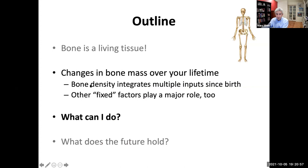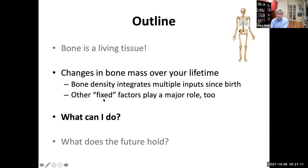The amount of bone you have now is really an integration of many different inputs that have happened in your life since birth. We talked about environmental factors; there are also fixed factors — genetics — which make a big difference in bone mass. So the questions most important to this group are: how can we evaluate bone mass, and what do we do with that information? What are the interventions — both lifestyle and medications — that we can think about?